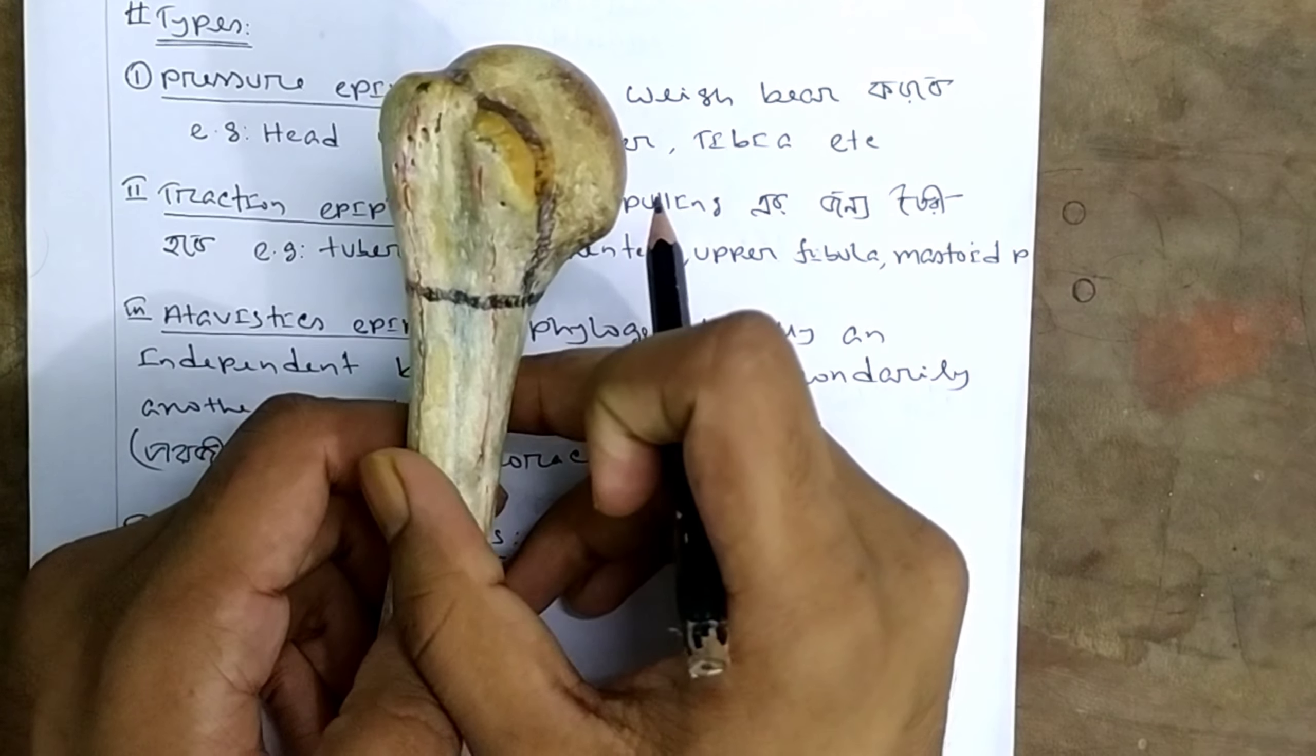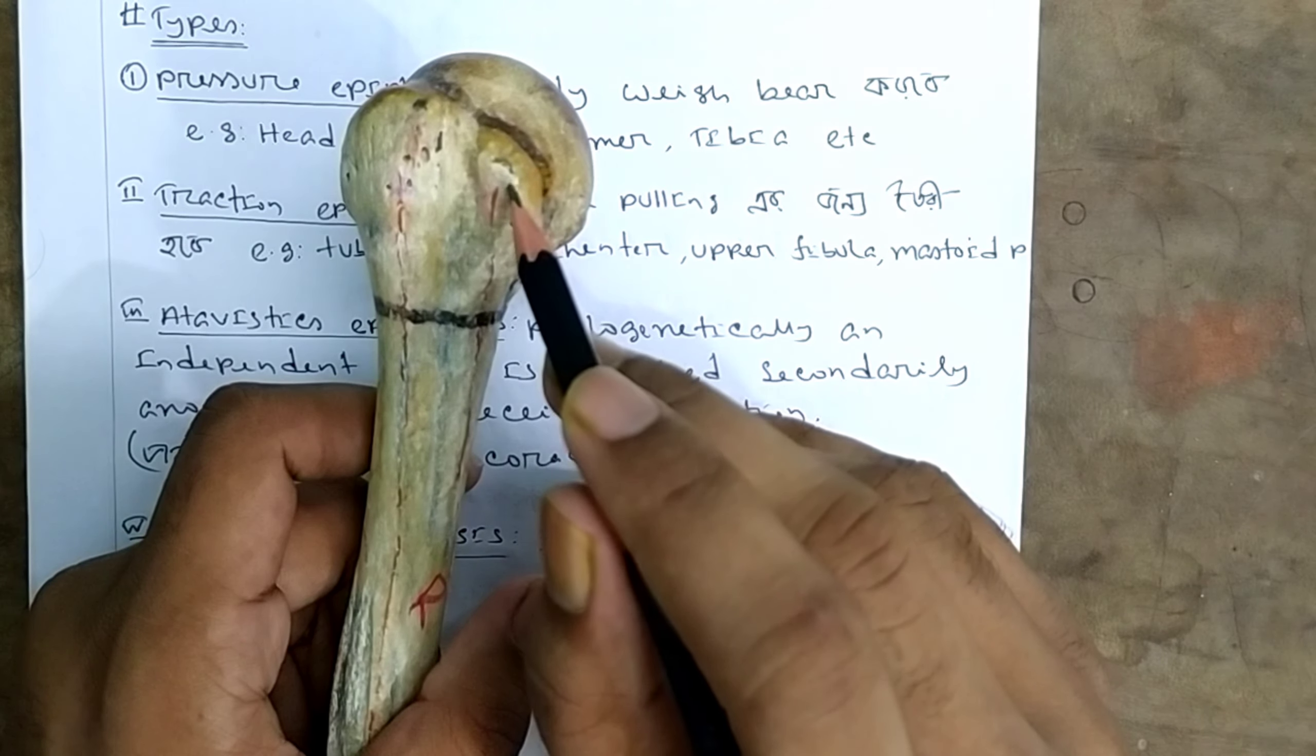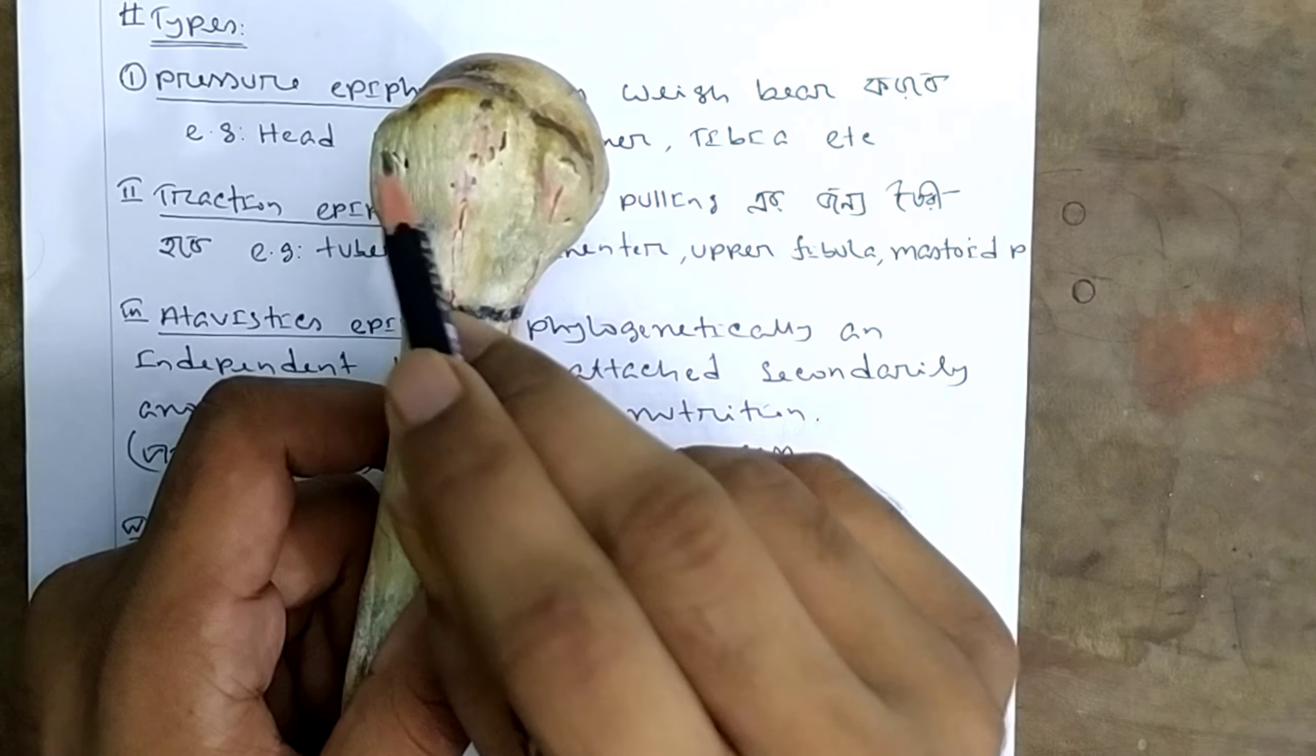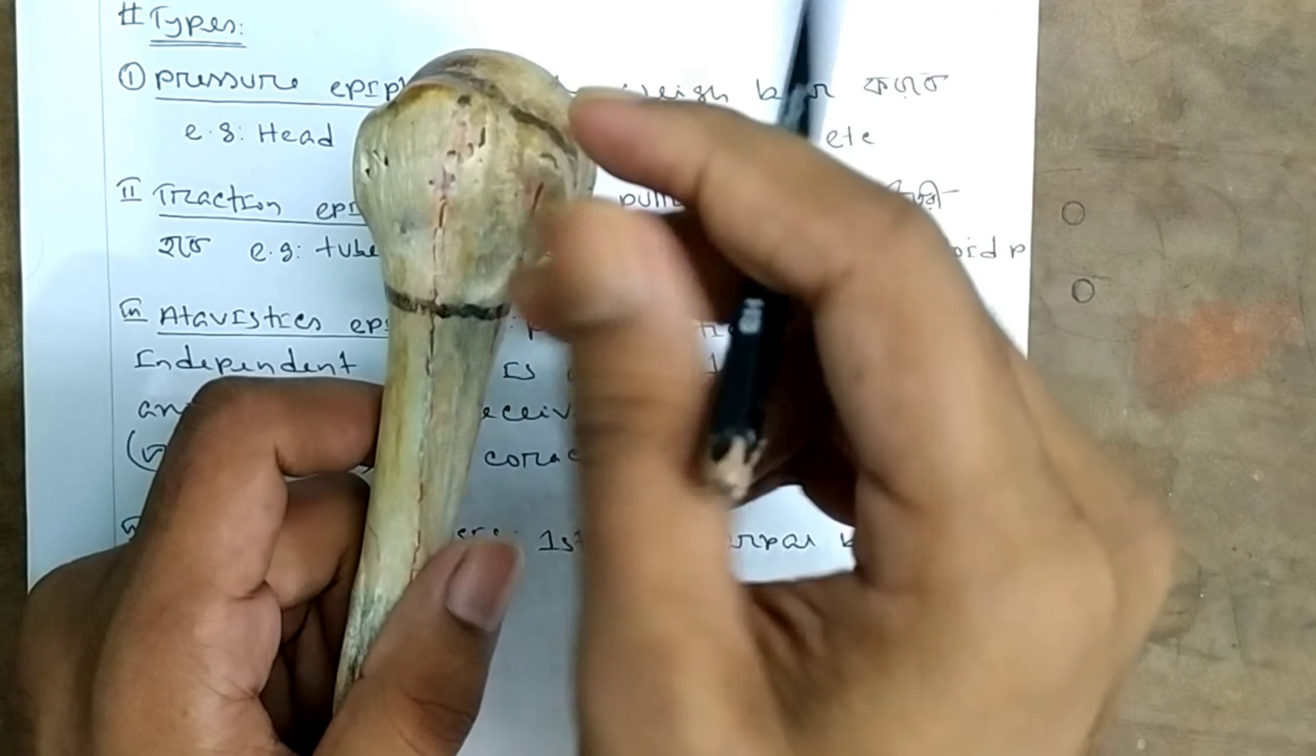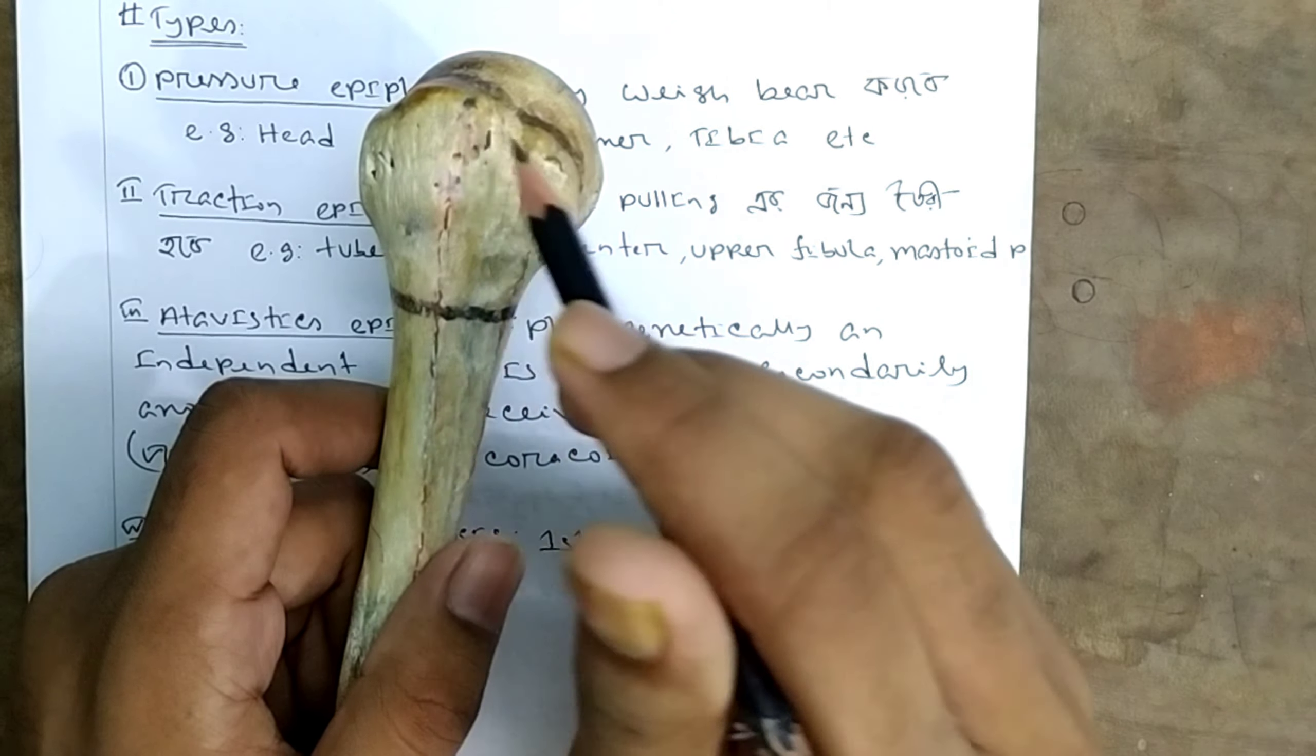Examples include the lesser tubercle and greater tubercle. These tubercles are where muscles attach. The supraspinatus and infraspinatus muscles, and the teres minor muscle attach here. This is where muscle pulling occurs. This extra projection of bone is the traction epiphysis.